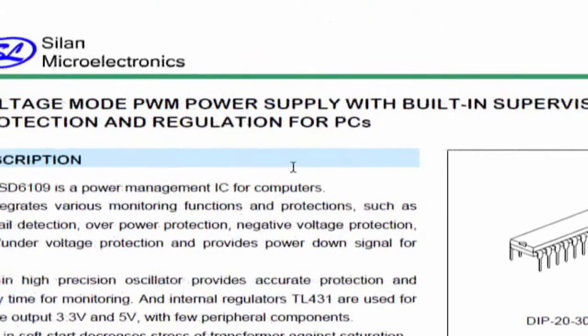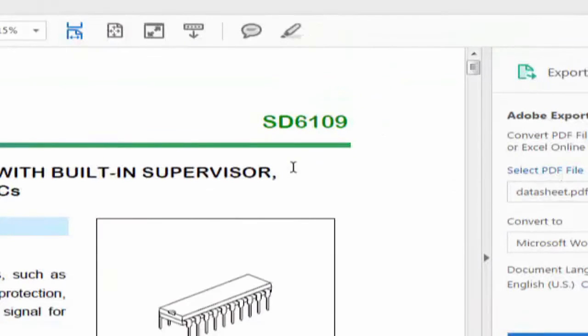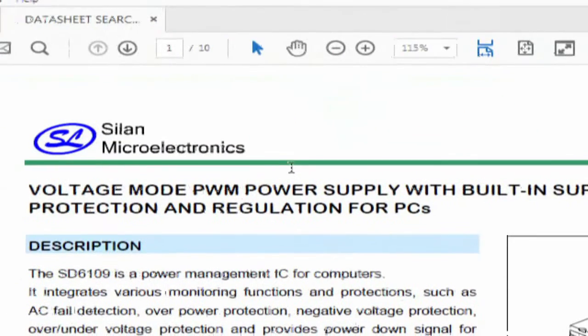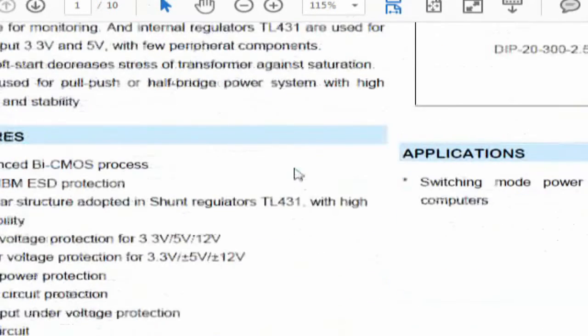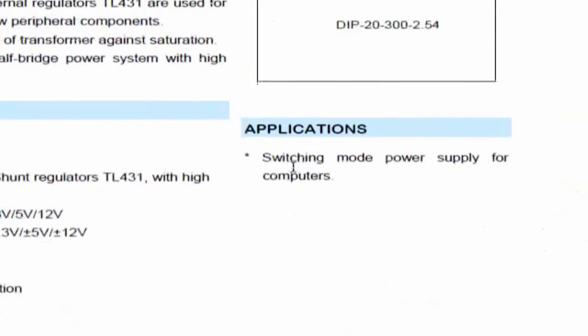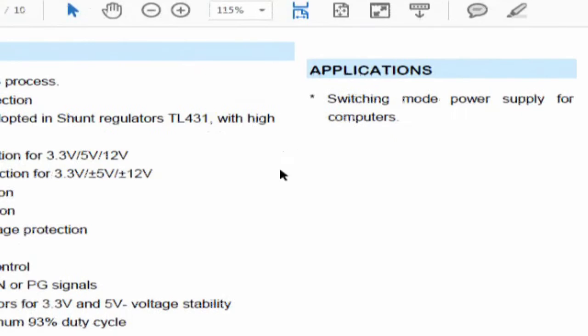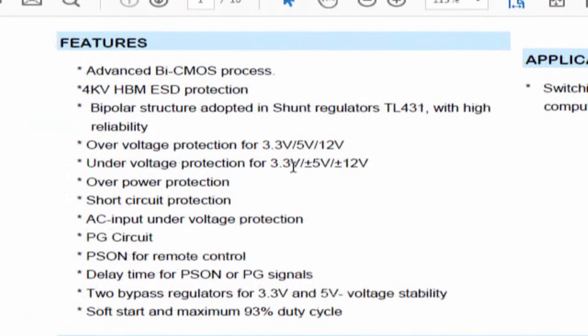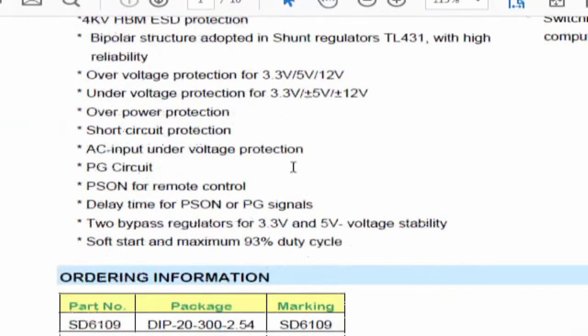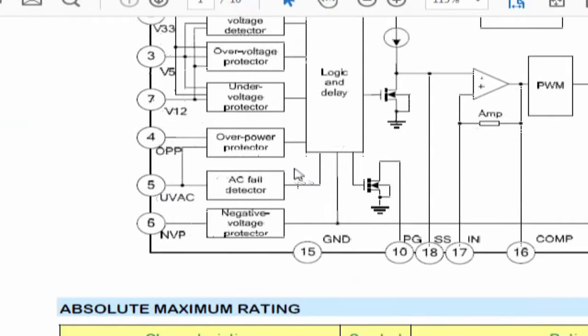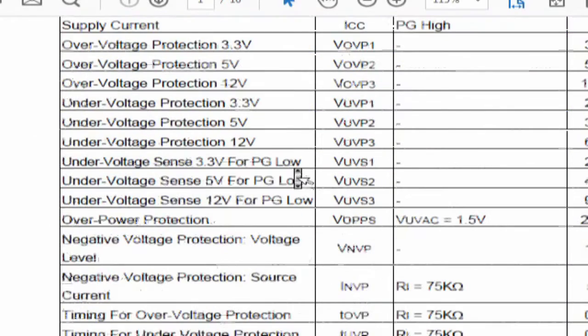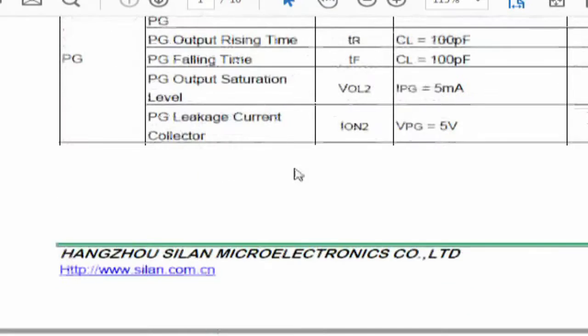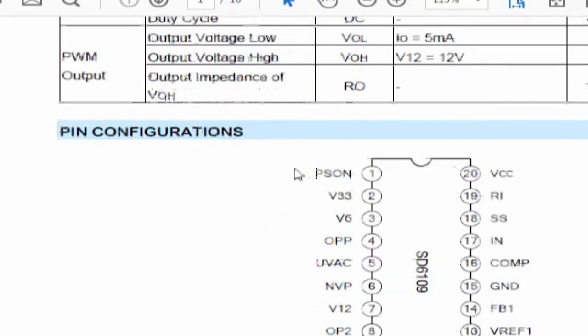Okay, so here I am at the datasheet of SG6109, manufactured by Silan Microelectronics. You can see in the applications itself it says switching mode power supplies, that is SMPS, so I guess it might be a common IC. What I am interested in are the input ports.